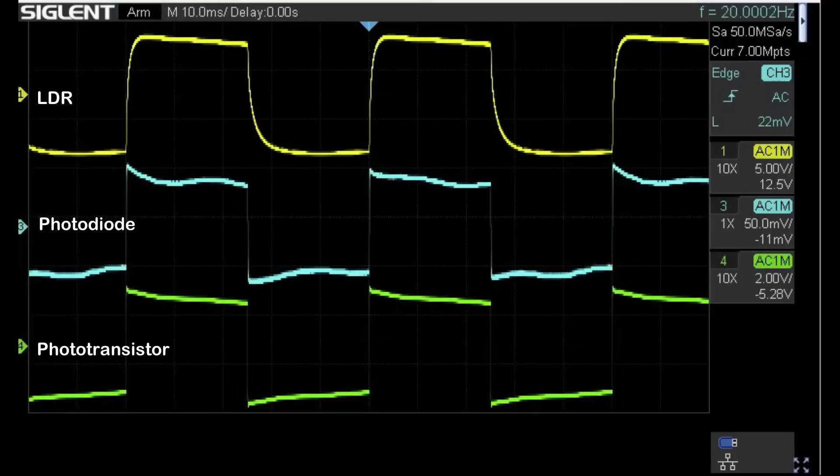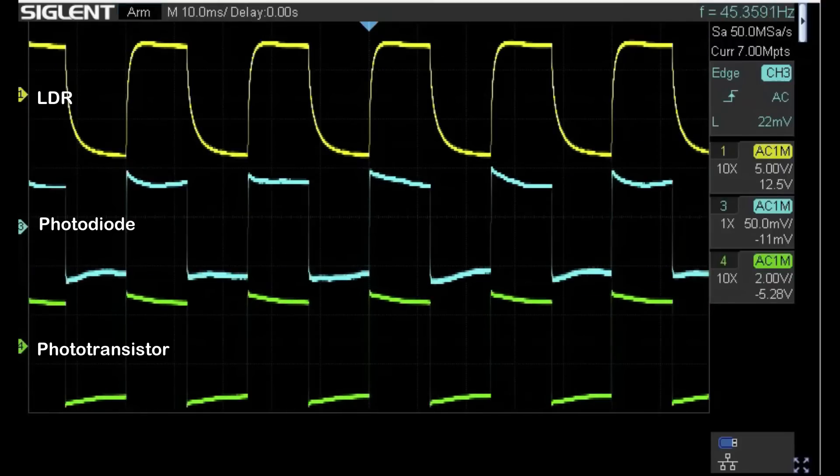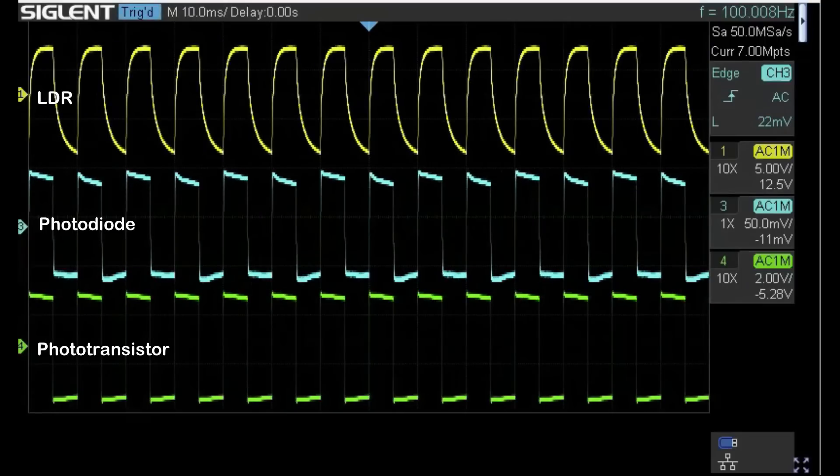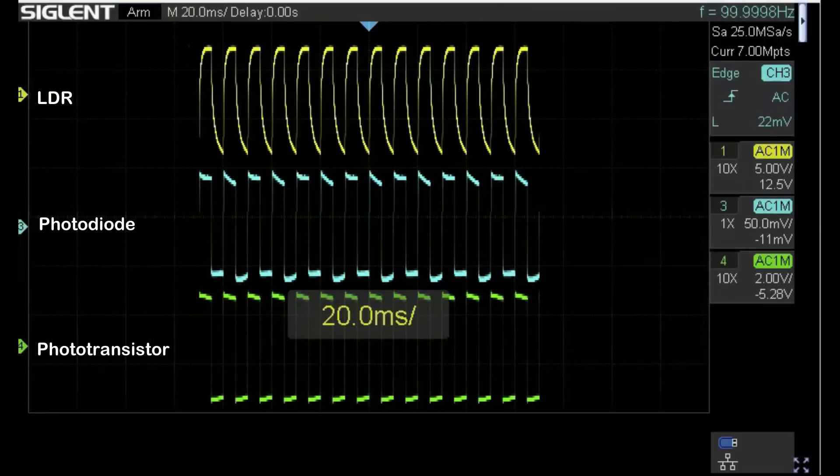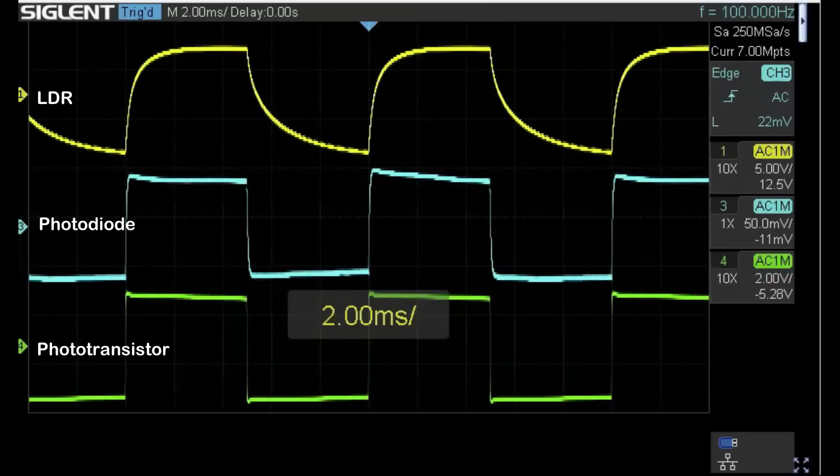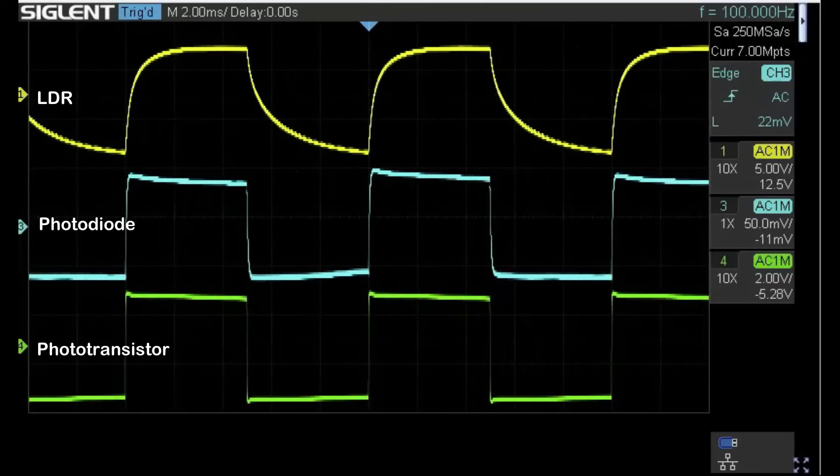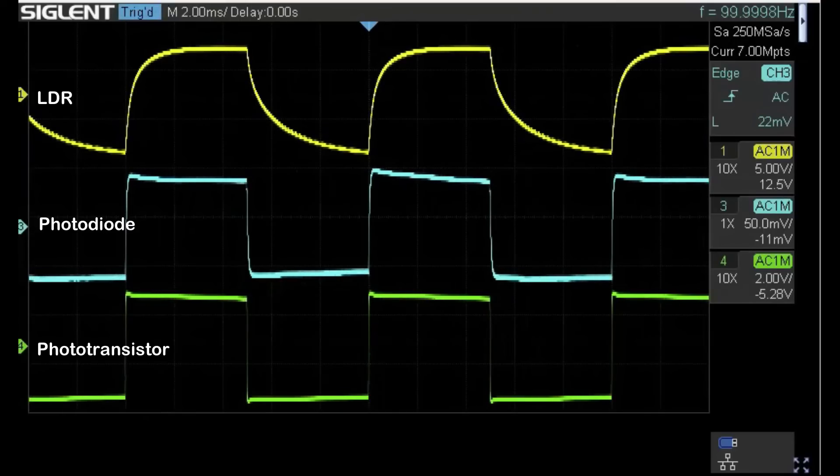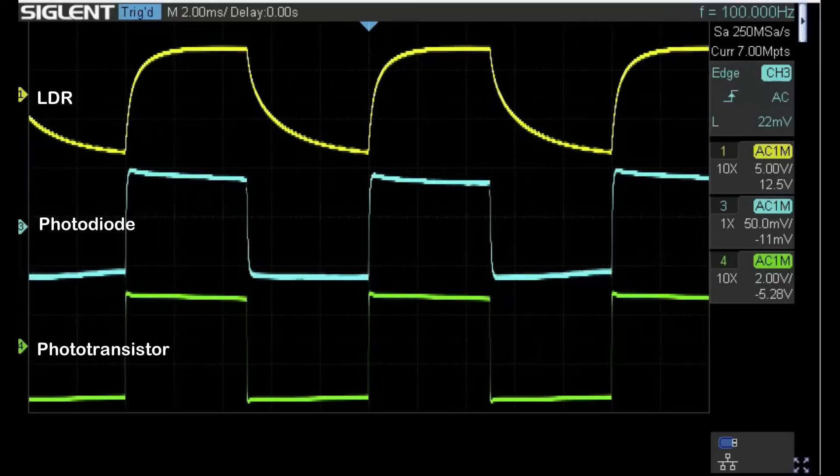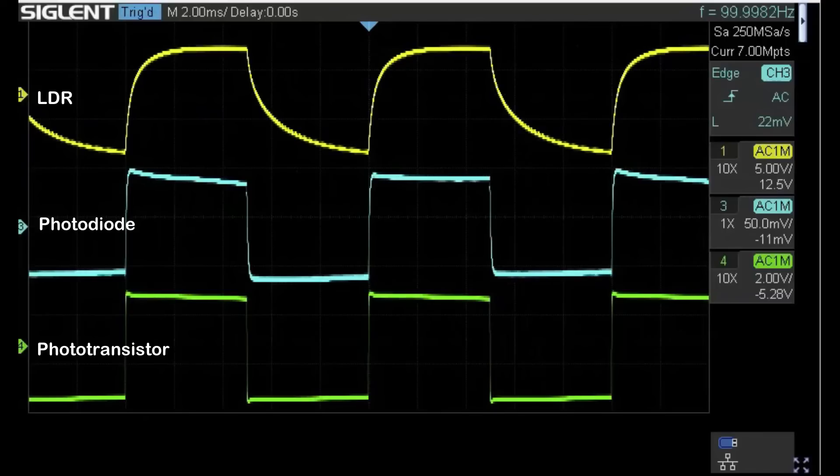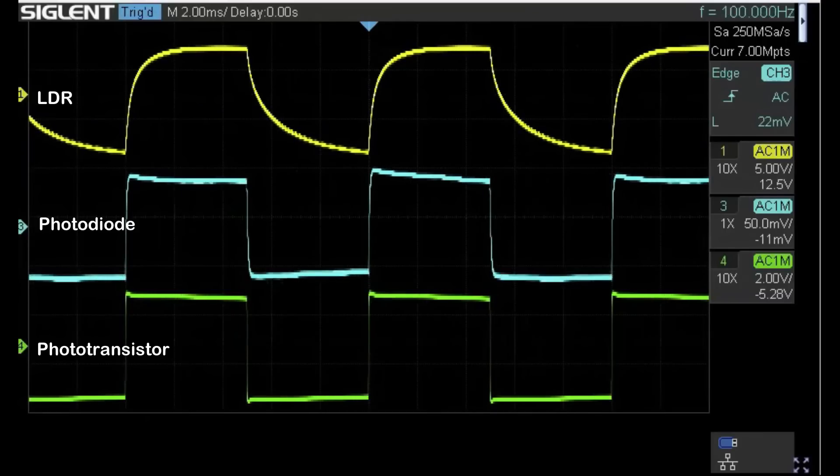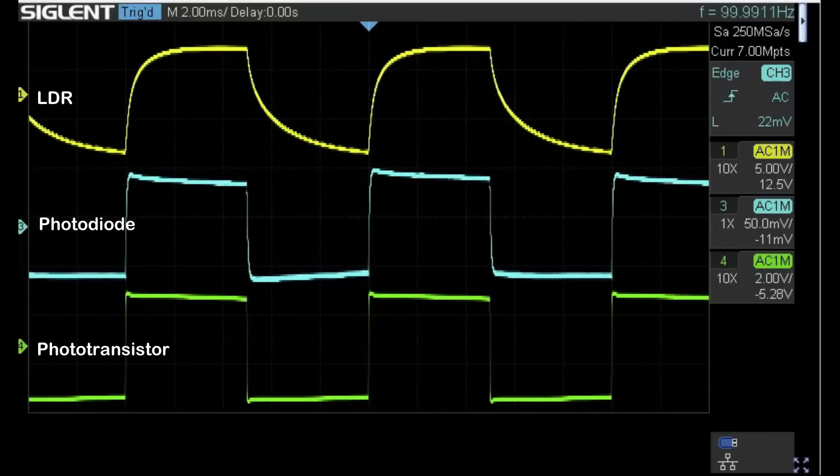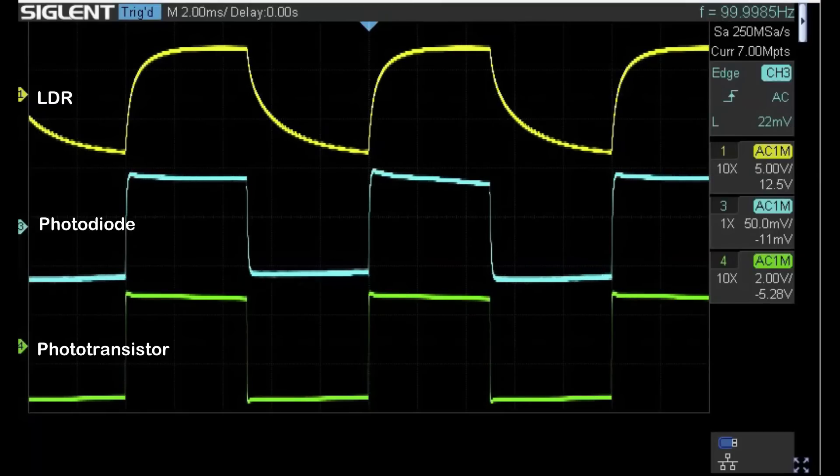This is 20 hertz, so if we go up to about 100 hertz and adjust the time base, you can see pretty much no change at all from the green trace phototransistor, and the blue is pretty similar. But you can already see that the light dependent resistor responds quite quickly when the light comes on, but it tails off and takes a while to go back to zero. I'm quite impressed because I wouldn't have thought it was capable even of 100 hertz.